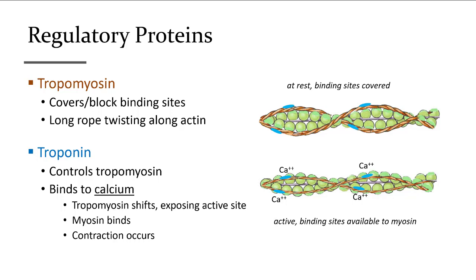Troponin binds to calcium. When calcium is released from the sarcoplasmic reticulum into the sarcoplasm, it goes straight to troponin, which causes troponin to shift over tropomyosin. Then the active sites on actin are exposed, myosin starts to bind, and that begins the pull of the Z-lines coming together.